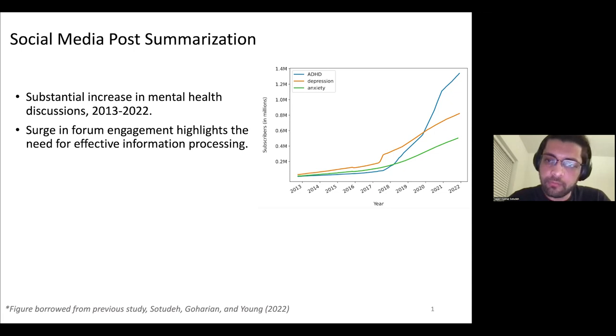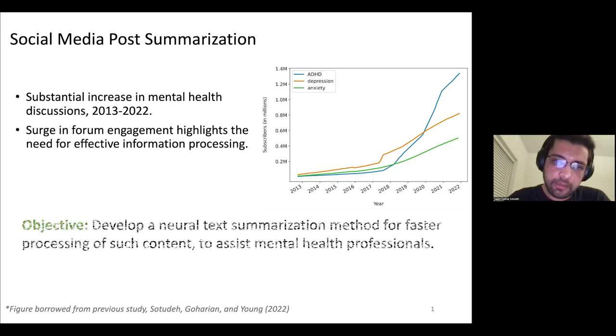As we have more users, it means that we have more data coming in and this surging engagement highlights the need for effective information processing systems. The objective of this work is to develop a neural text summarization method for faster processing of such content which can have applications in areas such as mental health monitoring.